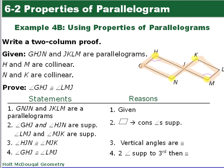Alright, so our proof, we always start with what we're given. GHJN and JKLM are parallelograms. We know that GHJ and HJN are supplementary. And the same for LMJ, so LMJ and MJK. Those are also supplementary because consecutive angles in a parallelogram are supplementary.